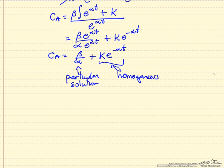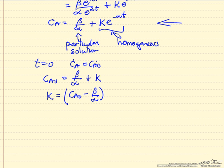And the constant k we get from our initial conditions. We know that t equals zero, CA equals CA0. So that means CA0 equals beta over alpha plus k e to the zero. So now I have the value for k.